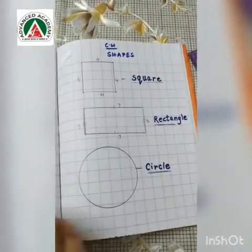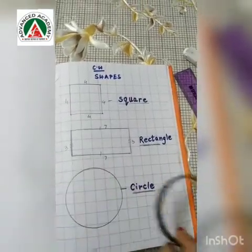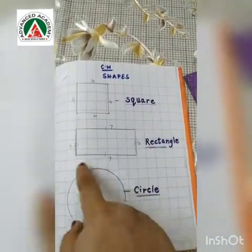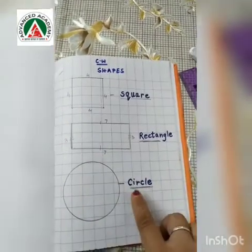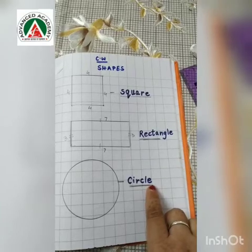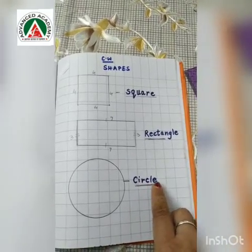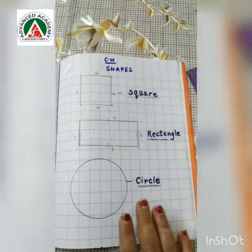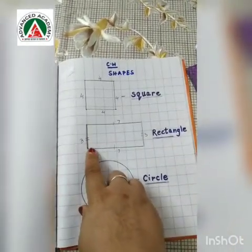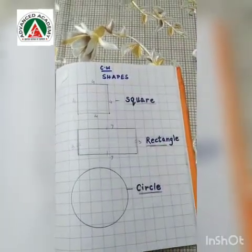And for circle, you can take one bangle or any round shape object to make a circle because it is round. The spelling is C-I-R-C-L-E. So only this much we are going to write in our copy, but you all have to practice the shapes drawing using your scale. It is very important.